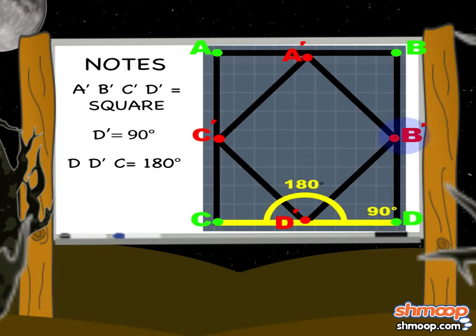Subtract 90 degrees for angle B'D'C', and we only have 90 degrees to share among the two smaller side angles. Splitting them up evenly, each angle gets 45 degrees.